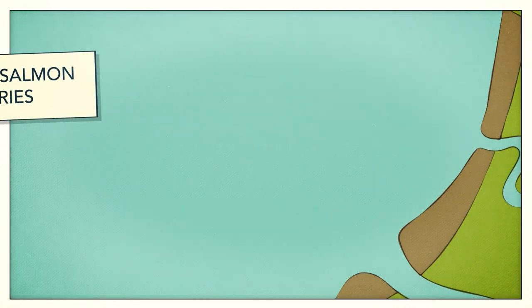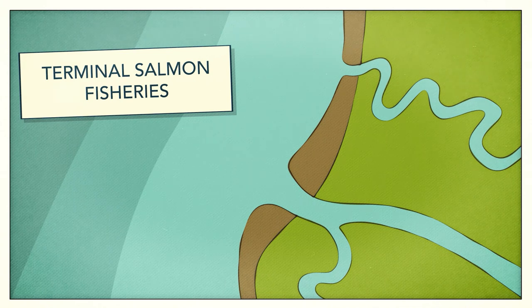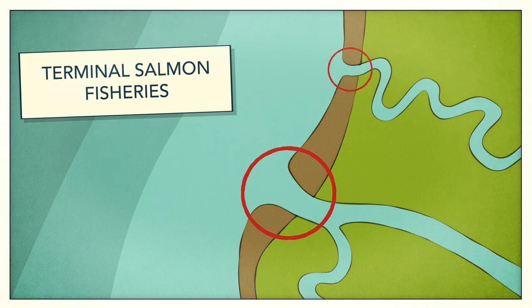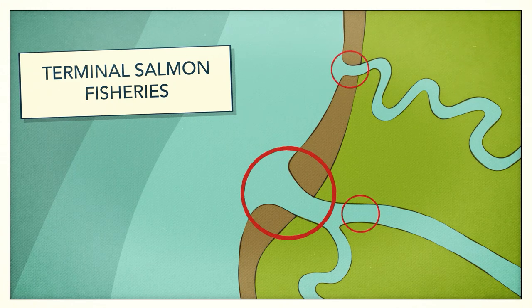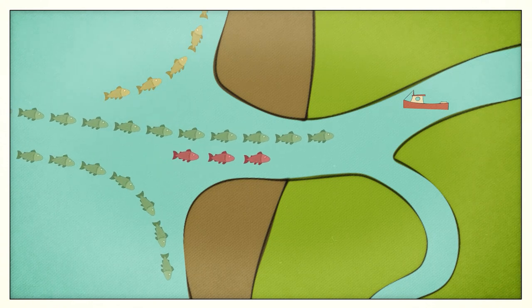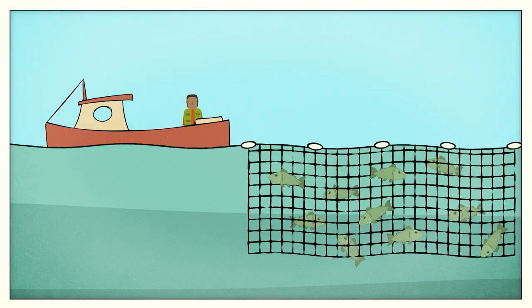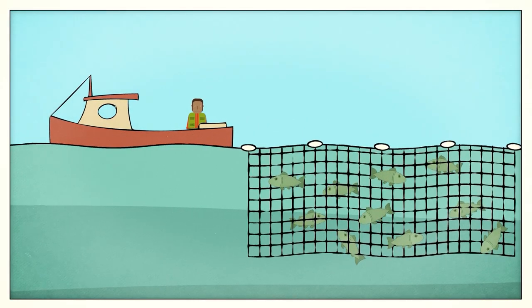Tribes are restricted to traditional fishing grounds. Most are located in terminal areas. They can't fish anywhere else. These fisheries are located in bays or near mouths of rivers where salmon runs end. Fishing in terminal areas makes selective harvesting easier because salmon have naturally sorted themselves into weak and strong stocks, allowing fisheries to harvest only the healthy populations.